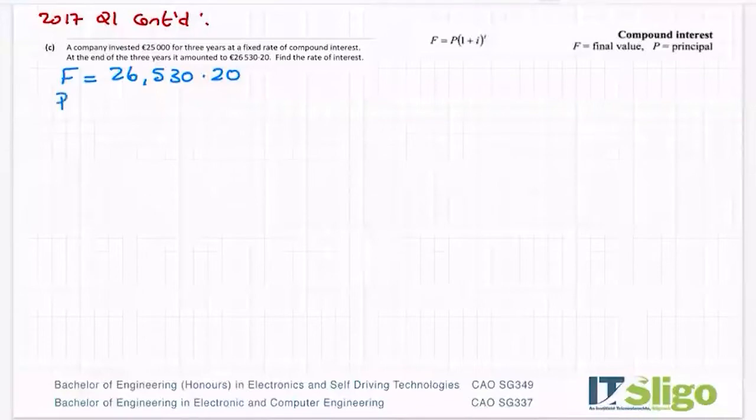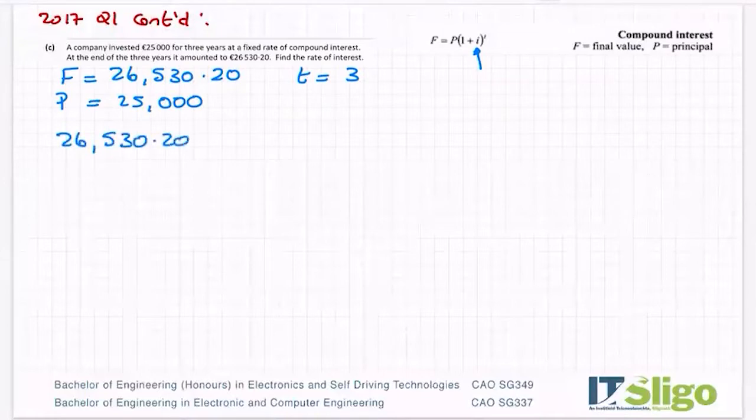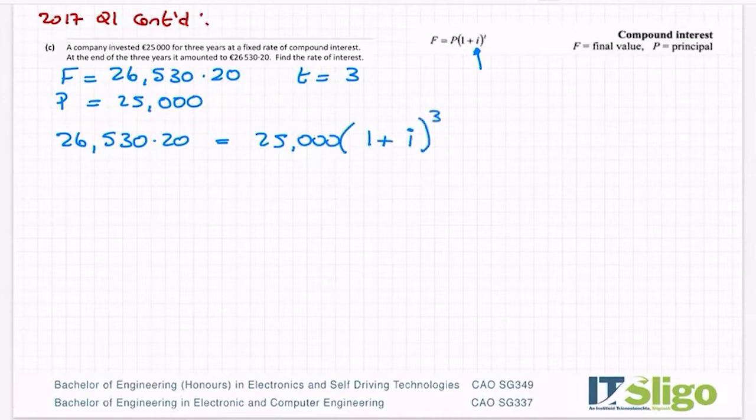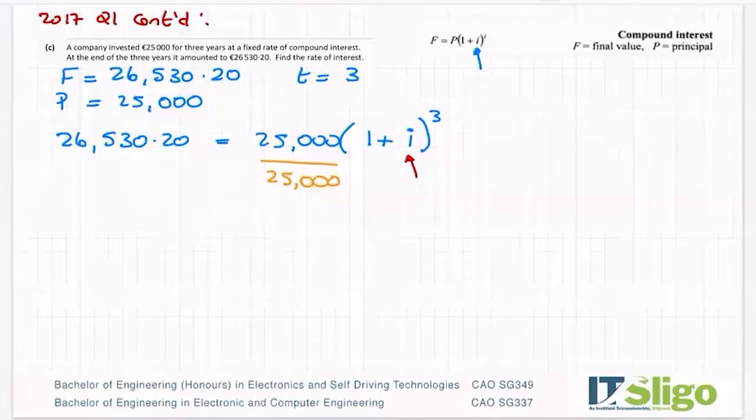At the end of the three years it amounted to €26,530.20. Find the rate of interest. So at the end of the three years the final amount was €26,530.20, and your final amount if you're earning interest is always going to be the bigger amount anyway. I need to find the interest rate so I'm trying to find I, so that means I must also have a value for T which is three years. So we're saying that €26,530.20 equals P times one plus I to the power of three. Then just like formula manipulation you need to strip away everything from around that I. The easiest thing to get rid of first is actually this €25,000 because it's furthest away from the I. So if I divide that side by €25,000 I also have to divide that side by €25,000.